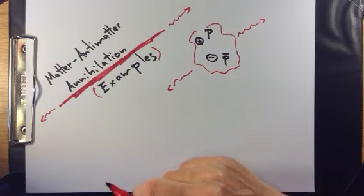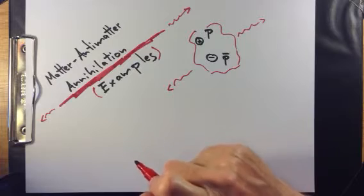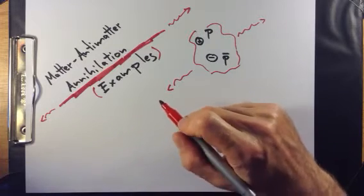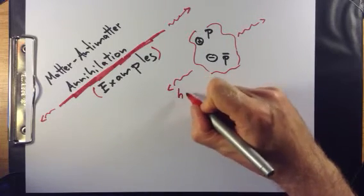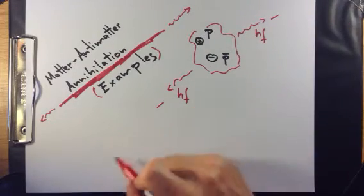Because the momentum before the annihilation was zero, the momentum afterwards has also to be zero. Therefore, the two photons, hf, are emitted in opposite directions.